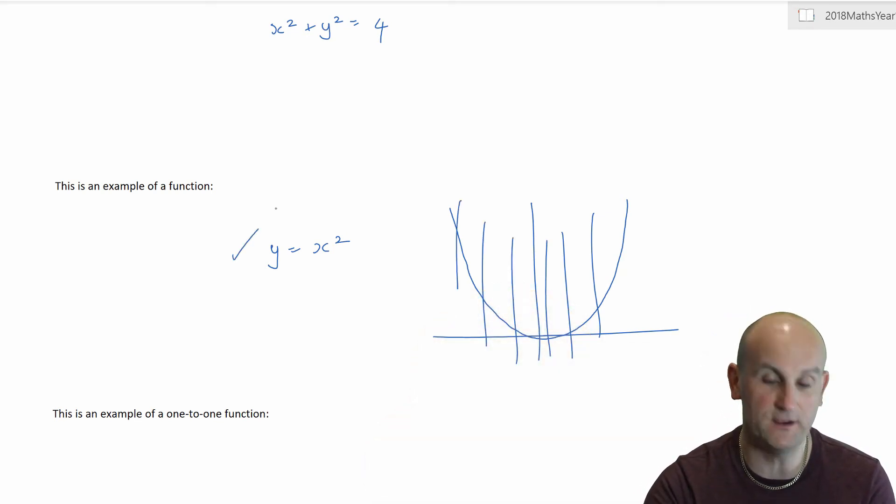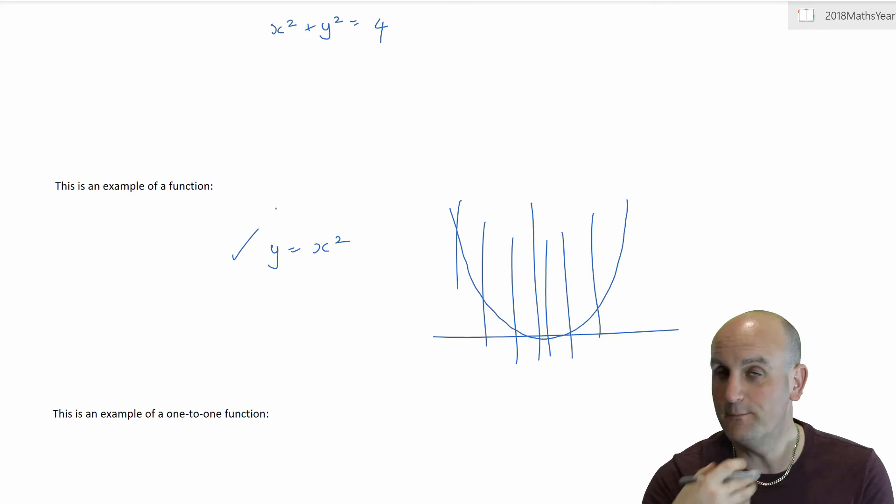So I now know this is a function. The problem with inverses, ladies and gentlemen—this is the big learning as well—is that you can only take an inverse, or a function can only have an inverse, if the function is one-to-one.